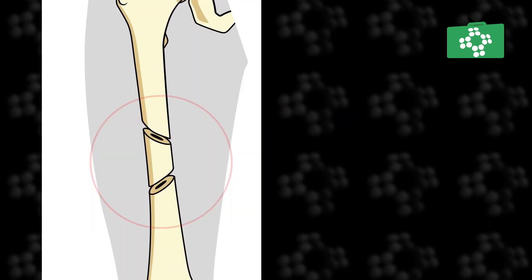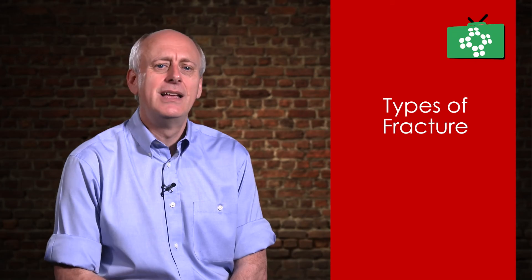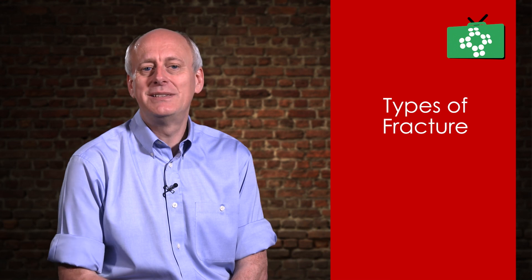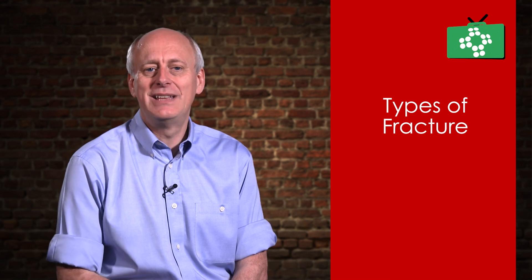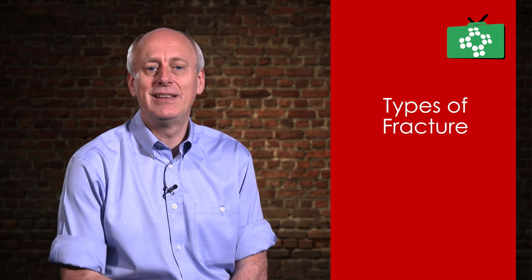The final type we will look at is segmental fractures, which are common in long bones like the legs and where the bone is fractured in two places, leaving a floating segment of bone between the two breaks. It is not essential as a first aider to know exactly what the fracture name is because the treatment is generally the same.